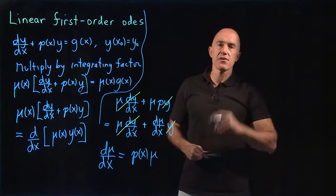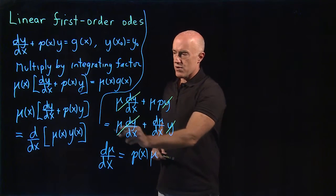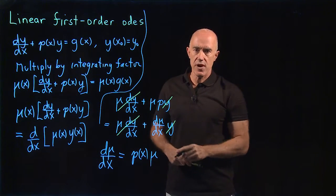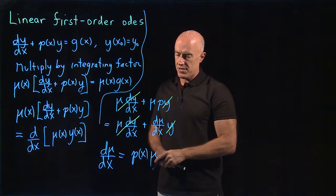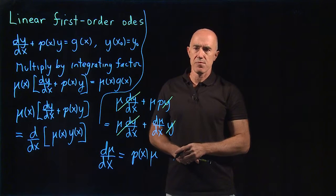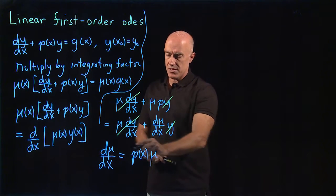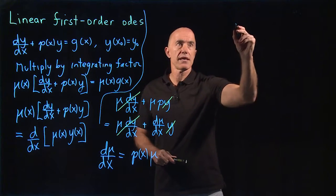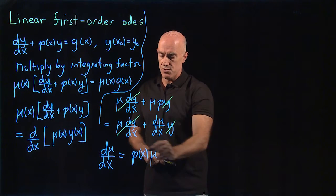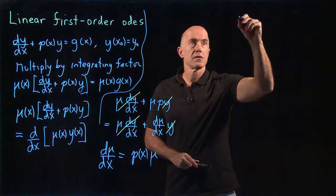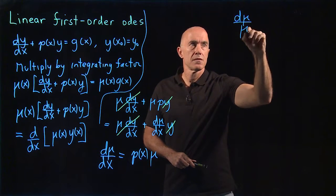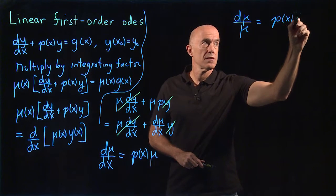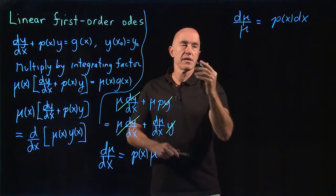That's another differential equation. Our method of looking for an integrating factor results in a differential equation for the integrating factor. Luckily, that differential equation is separable. So since it's separable, we can separate it and integrate. We end up with d(mu)/mu equals p(x) dx.